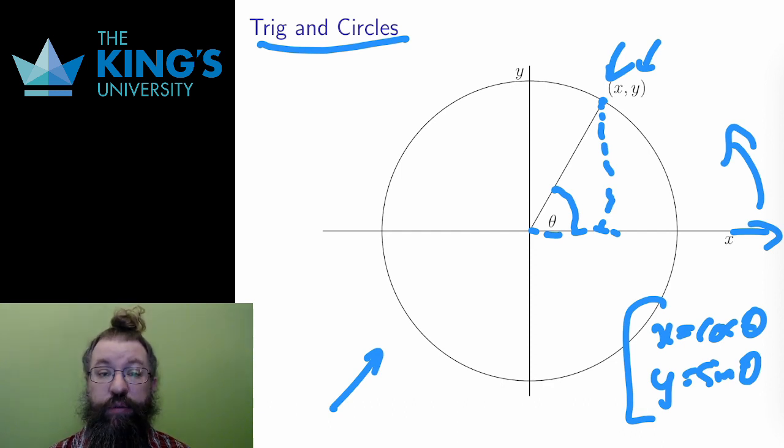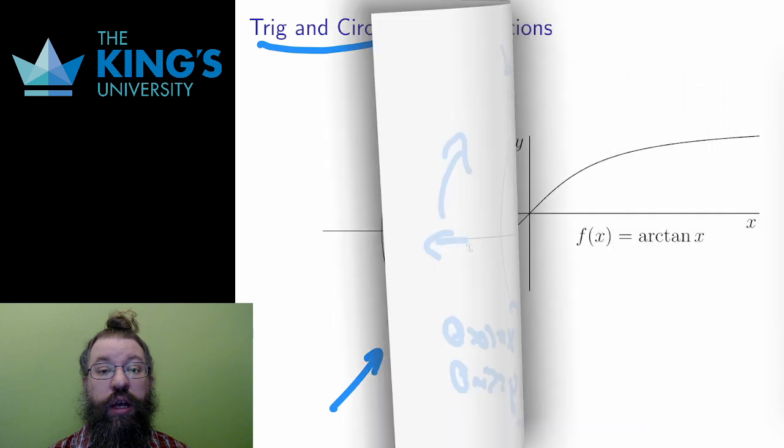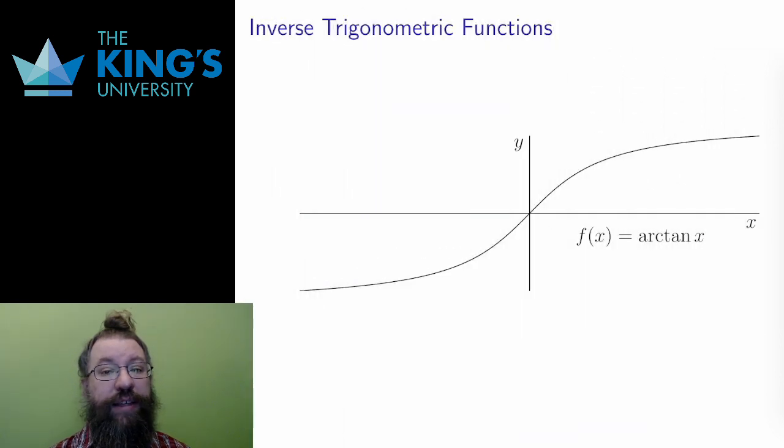Each trig function has an inverse. In the figure here, I've drawn the graph of the inverse tangent function. Each inverse trig function has a specific domain. Here, the inverse tangent is defined for all real numbers, but most of the others have smaller domains. You can consult the reference materials for the specific domains.